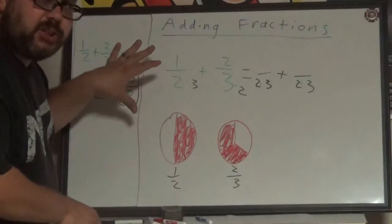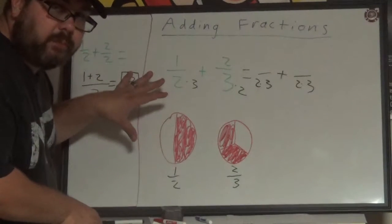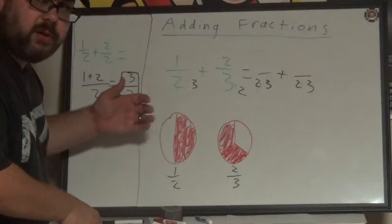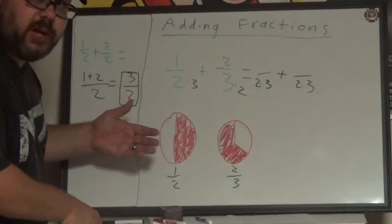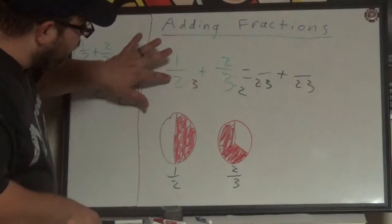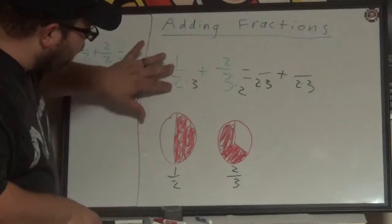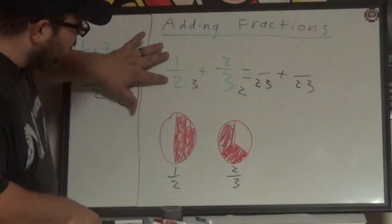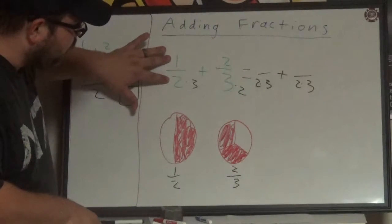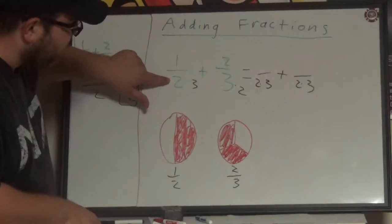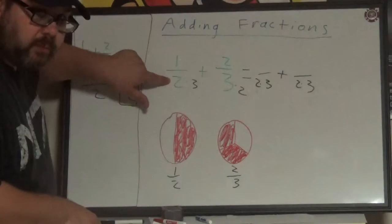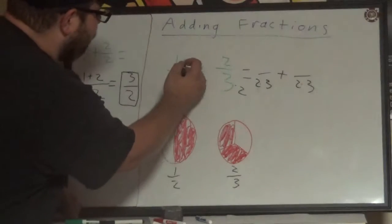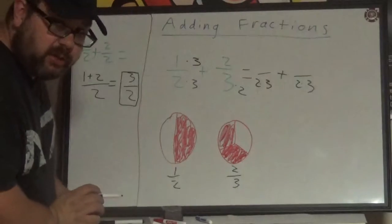Any time that we change a denominator, we can do that as long as we do the same thing to the numerator, and it creates what we call an equivalent fraction. So if I'm going to multiply, let's ignore the second fraction for the moment. For one over two, if we multiply the denominator by three, we can create an equivalent fraction by also multiplying the numerator by three.